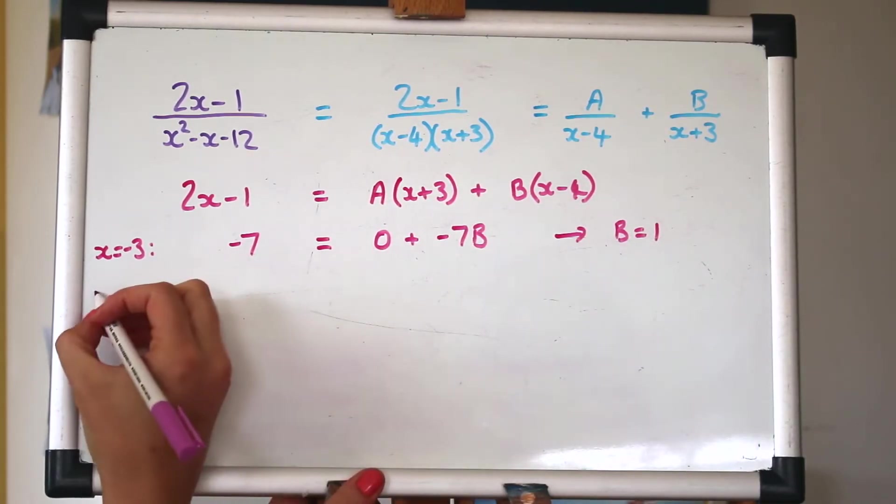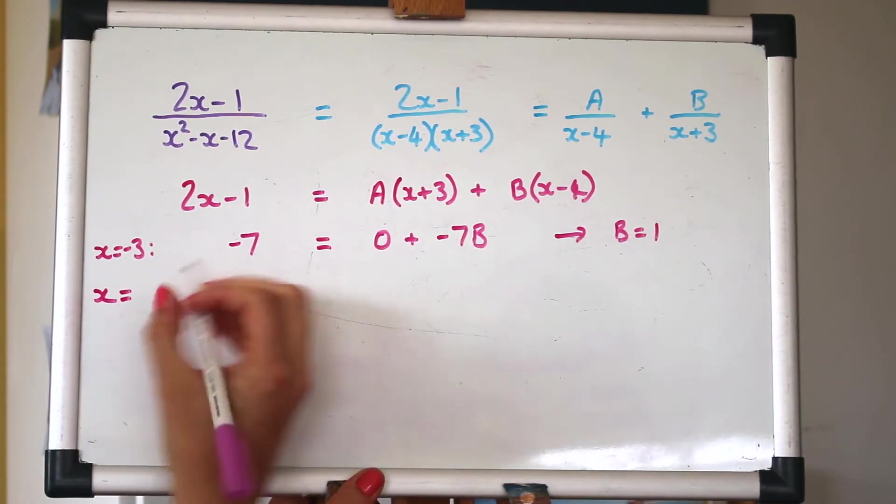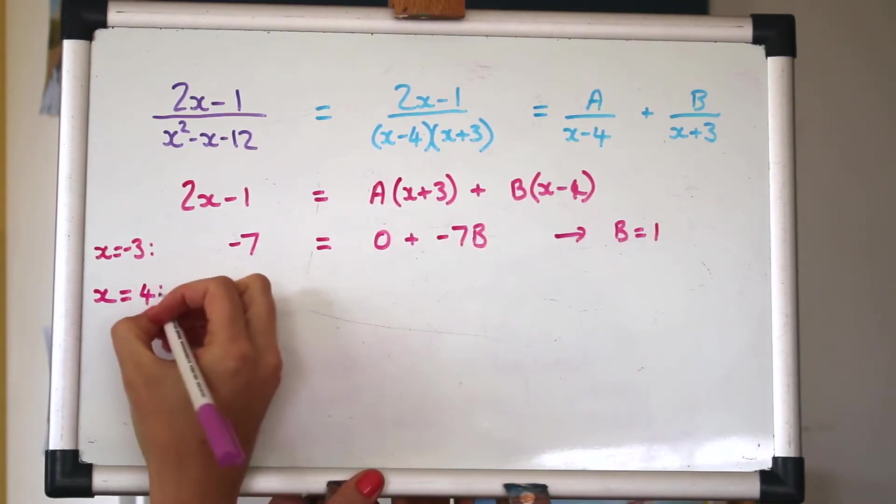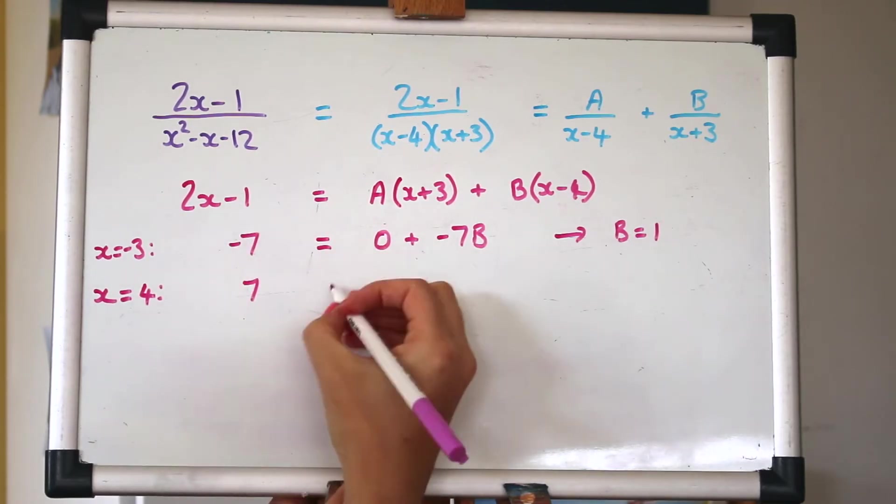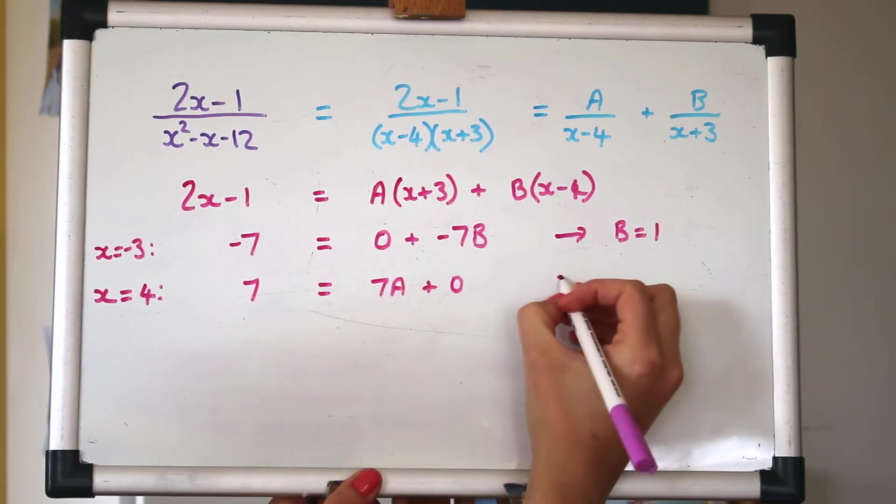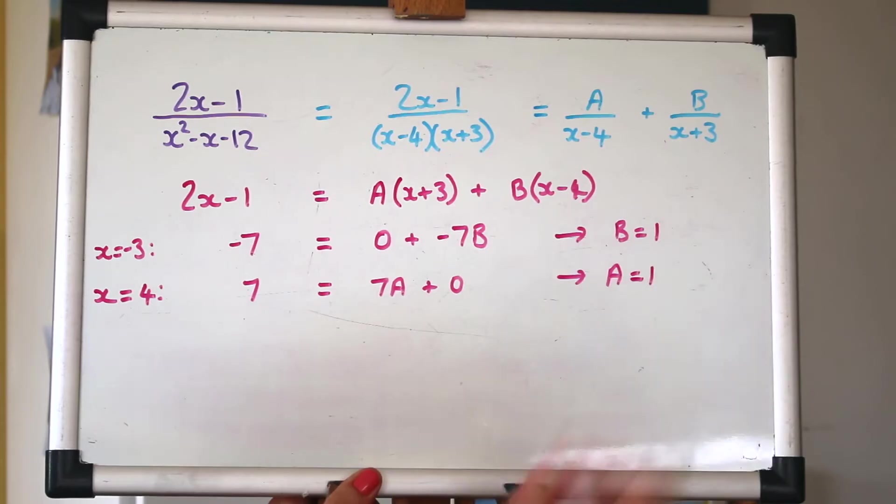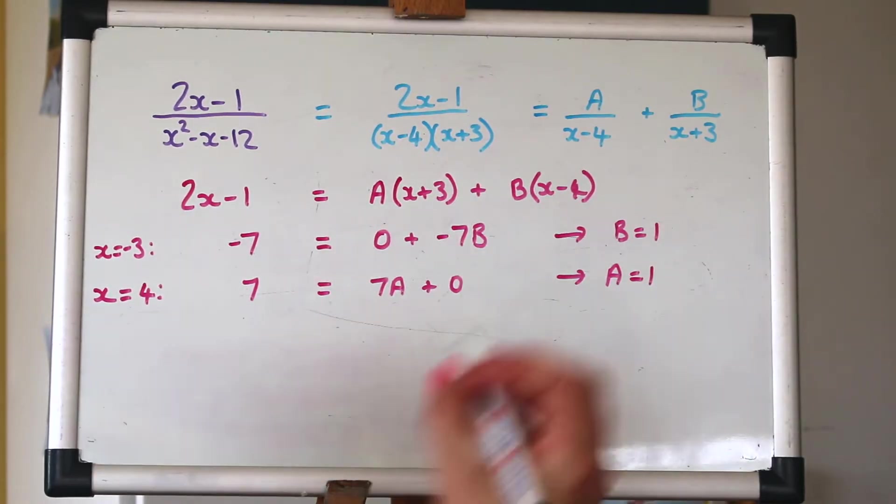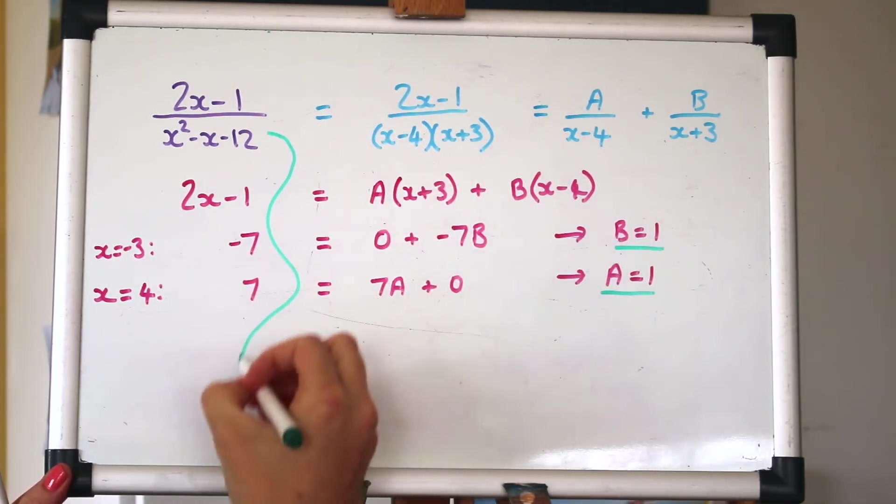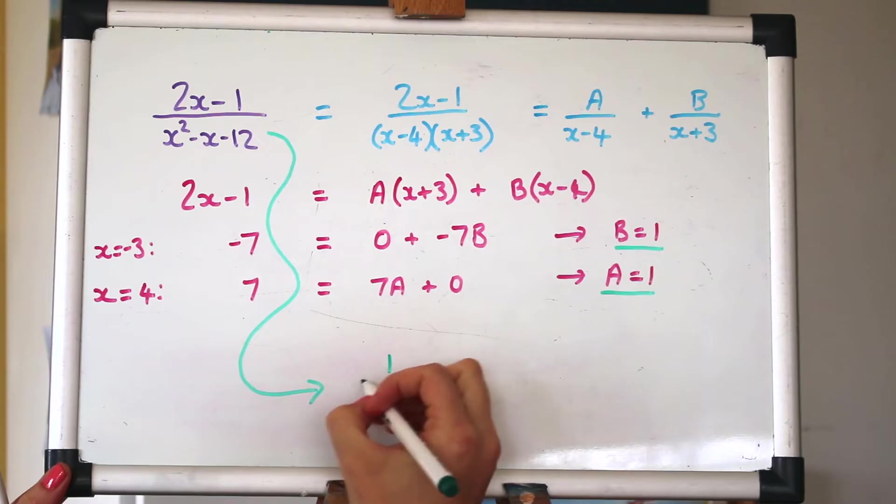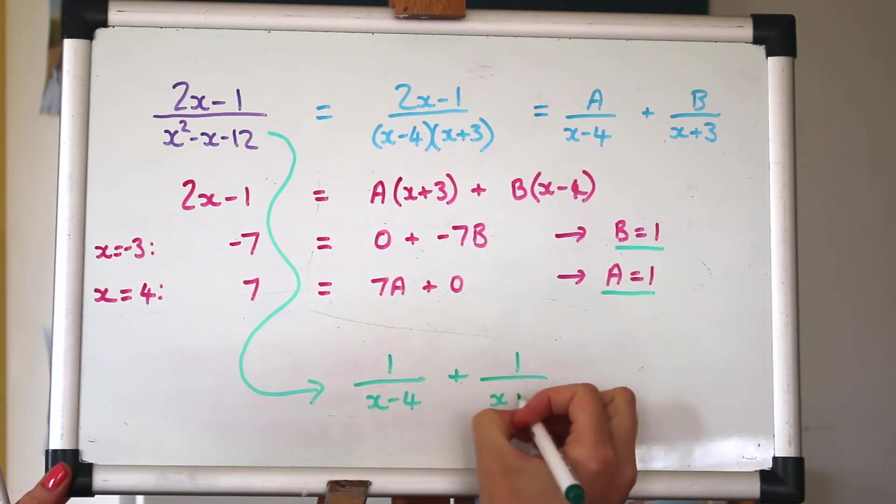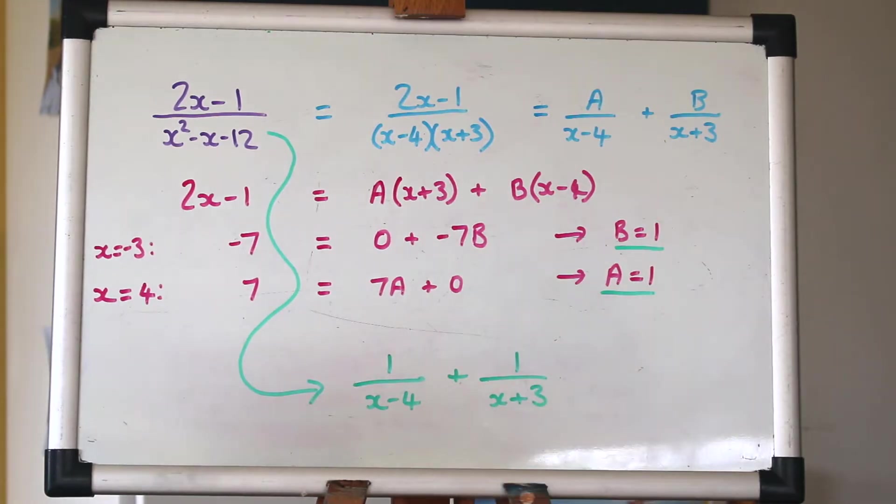Now we can pick another value of x. Again, let's pick wisely to make that 0 if we can. So x is 4. And we'll have 7 on the left here and 7a plus 0. So again, a is 1. Nice easy example to start with. So by finding those out, we've now figured out that this fraction here can be written as 1 over x minus 4 plus 1 over x plus 3. A really good skill to have.